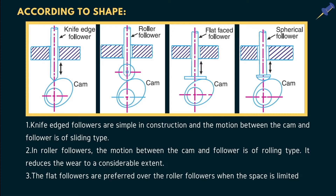In the roller follower, the point of contact between the follower and cam is in the form of a line or point, forming a higher pair. Because of the roller, the motion becomes smoother compared to the knife edge follower. It can operate at very high speed, such as in valves of IC engines. In the spherical follower, the surface is curved, and the follower moves in a reciprocating direction when the cam rotates.